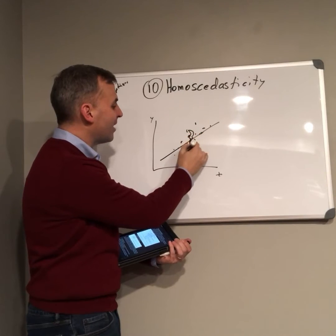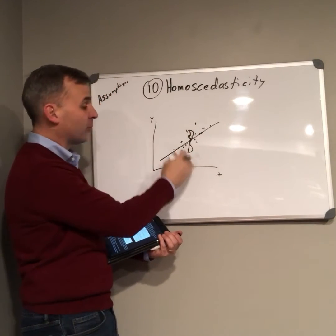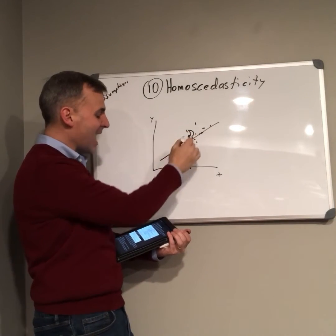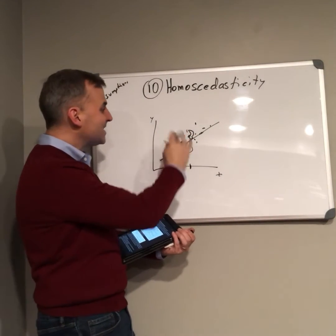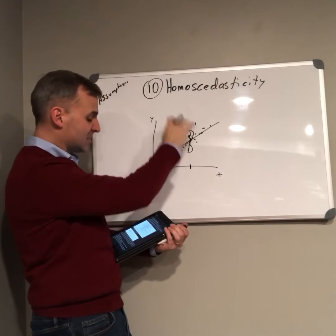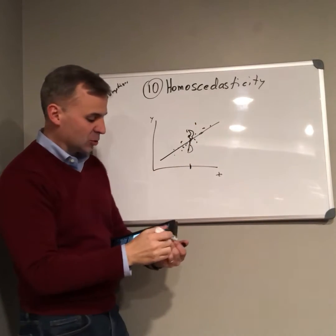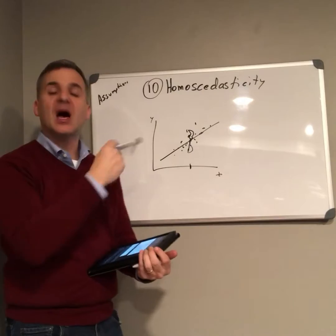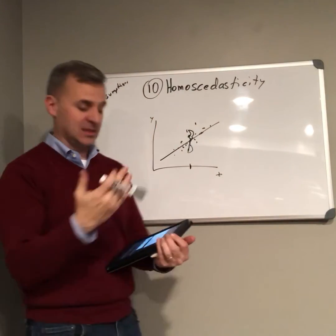There is some spread of errors around that expected value, because different people at the same level of X may have different values of Y. The idea is that the variance of the residuals — Y minus Y-hat — for any particular value of X should be constant across all values of X. That is homoscedasticity.